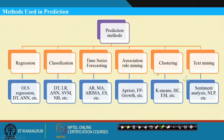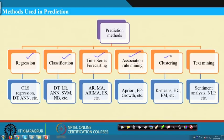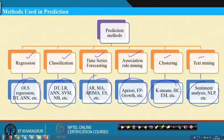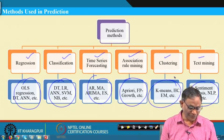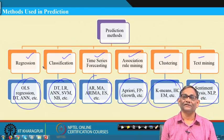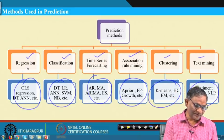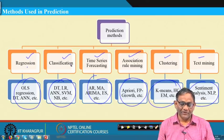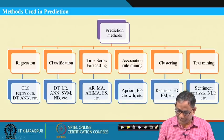There are a large number of methods under different groups of prediction methods. One is regression, classification, time series forecasting, association rule mining, clustering, and text mining. Under each group there are specific techniques. We will not be able to cover all of them, but any one class of techniques will be useful. Today I will discuss regression and also classification.